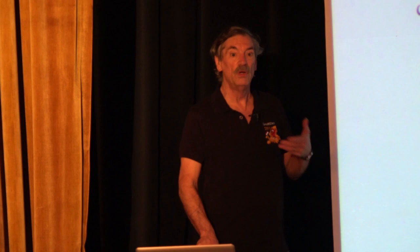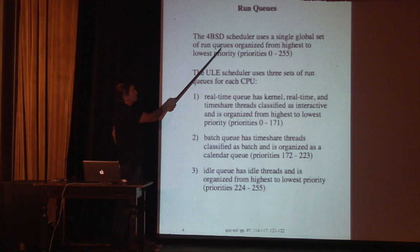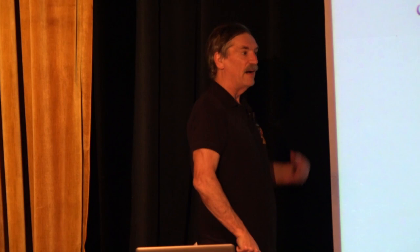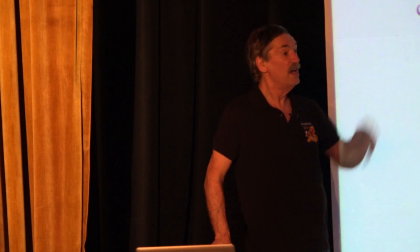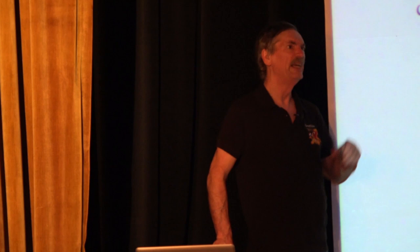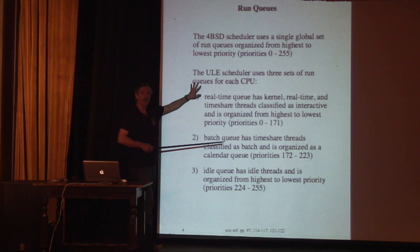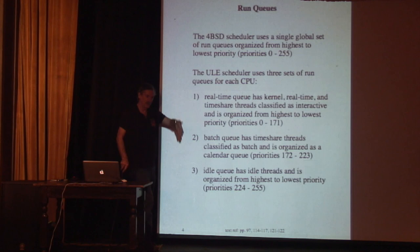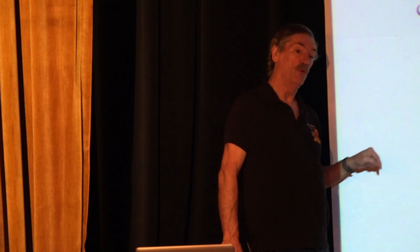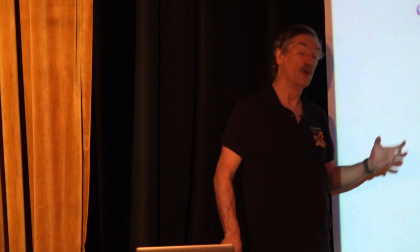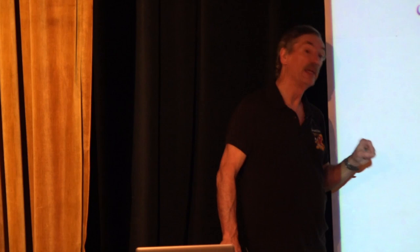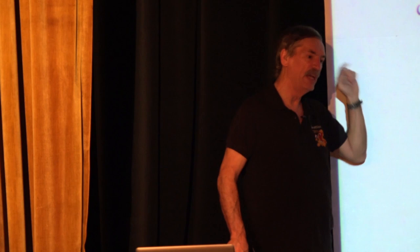The 4BSD scheduler has a single global set of run queues organized from highest to lowest priority. It was designed in a day without multiprocessors, so a single queue made sense. As you scale up multiprocessing, you get contention for the lock on that global queue. ULE uses three sets of run queues, and there's a set for each CPU. So each core in the system has its own set of run queues. When a processor stops running one thing and wants to select another, it only looks at its own queues.